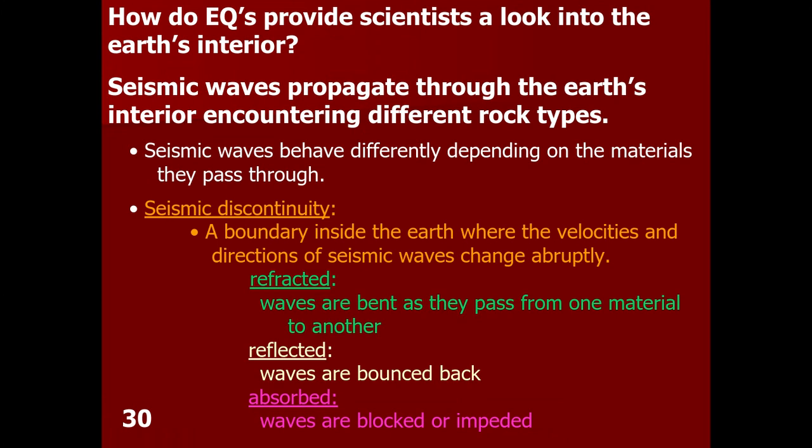Second, seismic waves can be reflected, meaning waves bounce back. As the wave propagates through the media and comes in contact with various rock formations or interior parts of the Earth, the wave is reflected back to the surface. Third, waves can be absorbed, blocked, or impeded — meaning that as the wave comes in contact with a particular media, it can be absorbed and basically dissipate and disappear.